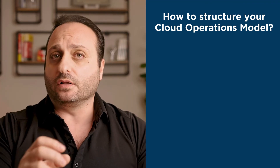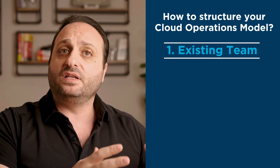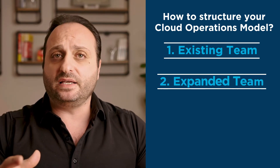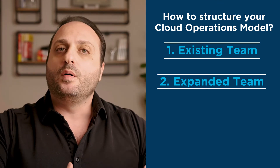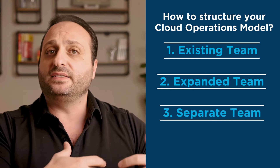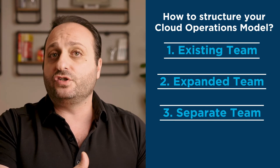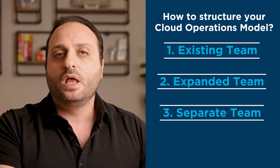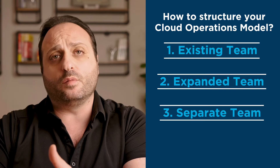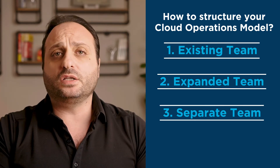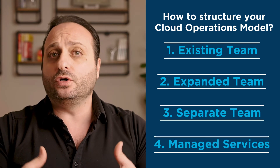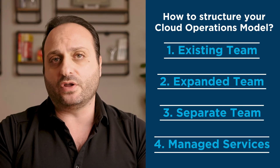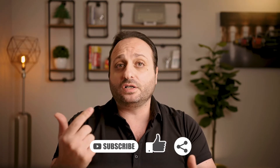So what did we cover today? We focused on how to structure your cloud operations model and talked about four models: using the existing team and giving them cloud responsibility; expanding the team and hiring one or two more folks to bring the team along; having a separate cloud ops team for lift and shift or lift, shift, and optimize with automation and a DevOps mindset, or pivoting to a platform ops team; and fourth, the managed services outsourcing approach. I hope this information was useful — please give me a thumbs up, share, and comment. I'd love to hear what you've used or if I missed something.